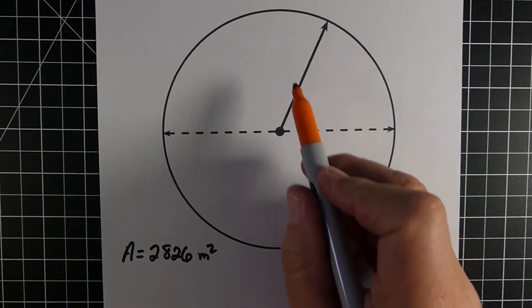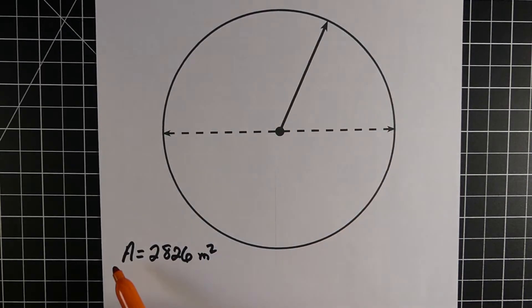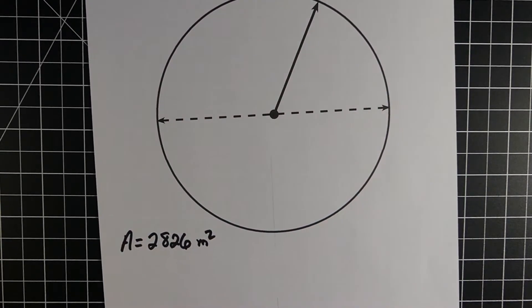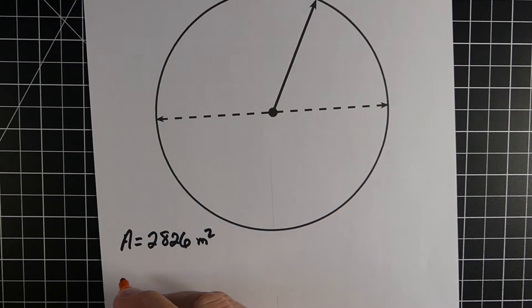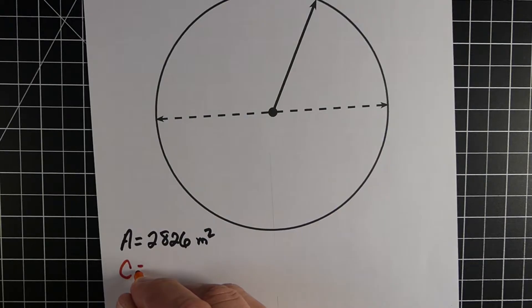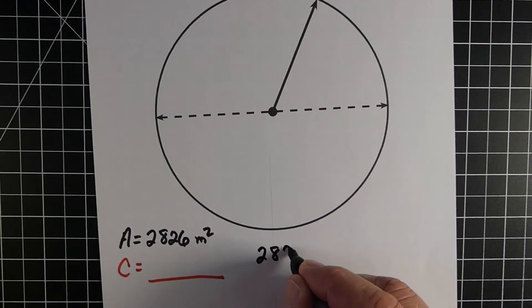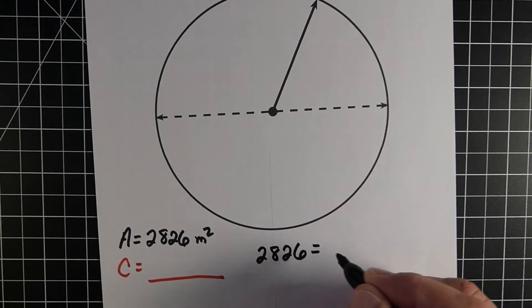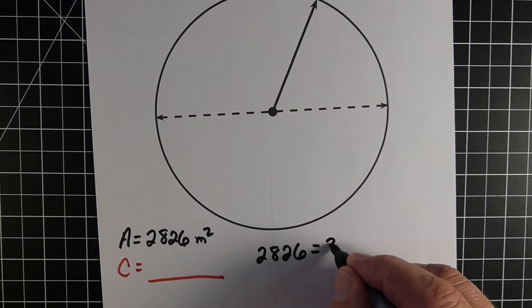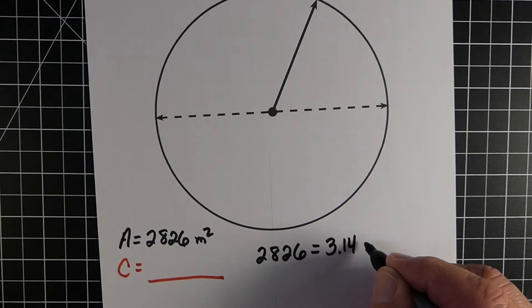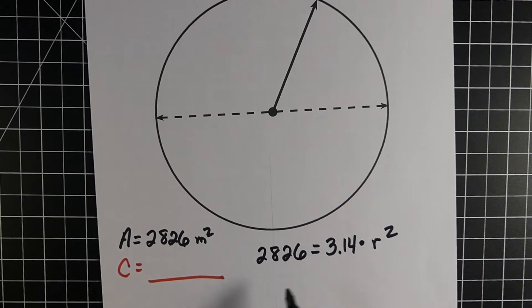That sets us up for our third and final example, which works exactly like the other two. We know the area of the circle — in this case it's 2826 meters squared — and our goal is to find the circumference. So we work backwards, starting with the formula: area 2826 equals pi times the radius squared.